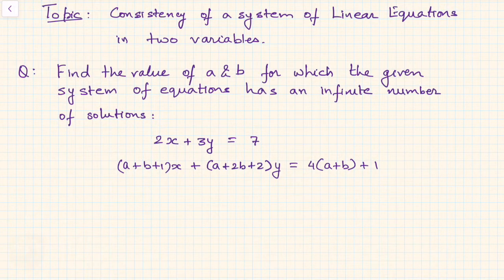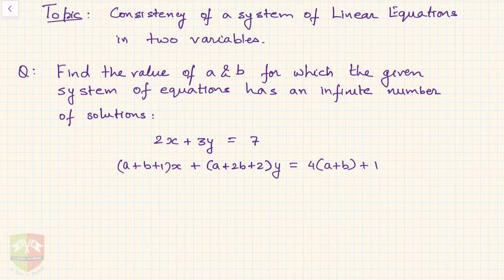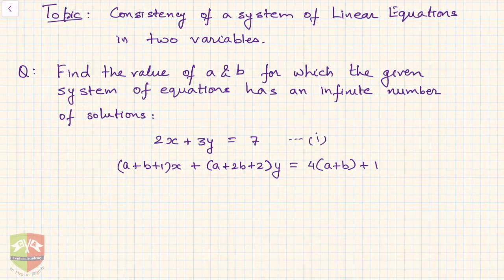Welcome to another session of problem solving on consistency of a system of linear equations in two variables. The question is: find the value of a and b for which the given system of equations has an infinite number of solutions. The equations are: 2x + 3y = 7 (equation 1), and (a + b + 1)x + (a + 2b + 2)y = 4a + b + 1 (equation 2).